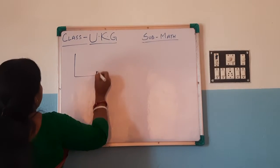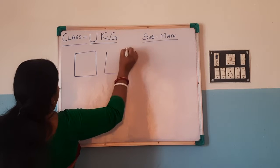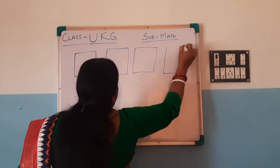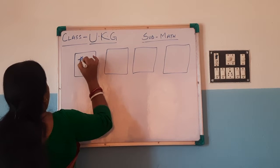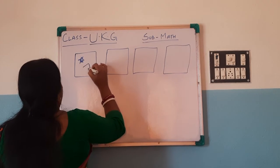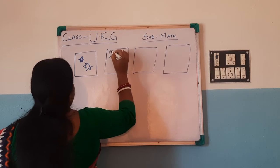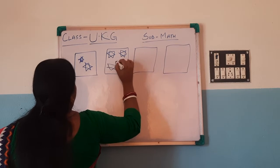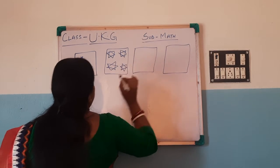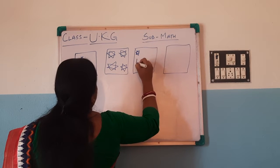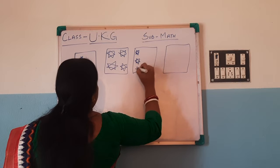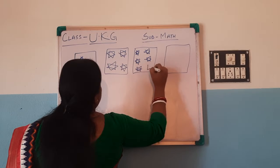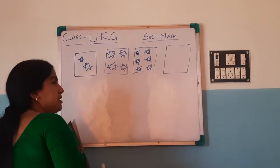I will show you. Look. Here are two stars — one, two. Here are four stars — one, two, three, four. Here are six stars — one, two, three, four, five, six. Here, six stars.